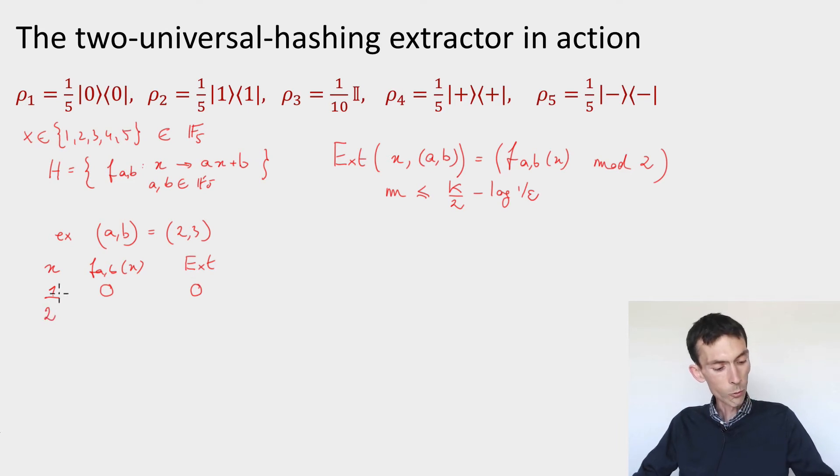Okay, so we do the same thing for x equals 2. Twice 2 is 4 plus 3, that's 7 mod 5, I get 2, and the parity is 0. So we can do this for the remaining inputs and here's the table that we get.